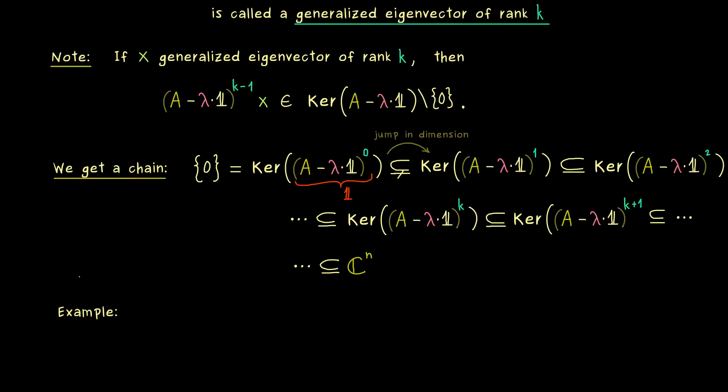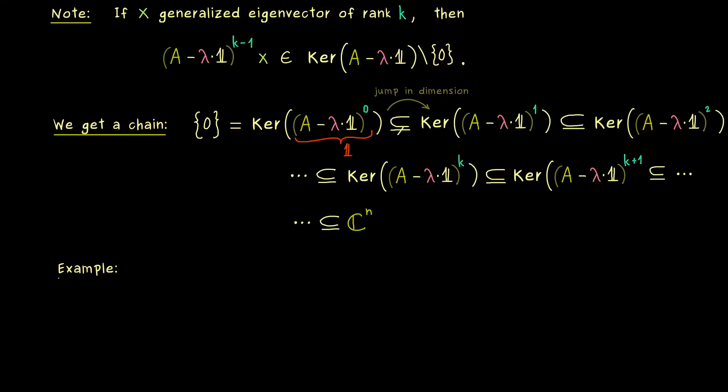However before we do that in the general case let's first discuss a nice concrete example. And there I would say it already makes sense to consider a typical Jordan box. So we have a triangular matrix and let's say the number 2 is on the diagonal. And if it's just one Jordan box we have ones above the diagonal as well. Okay, so this is our 3x3 matrix where 2 is our only eigenvalue.